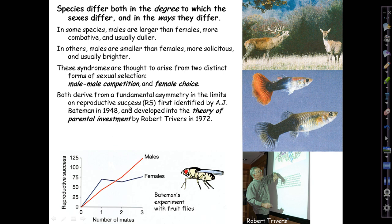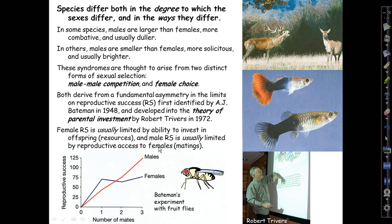Both derive from a really basic asymmetry in what limits reproductive success, often abbreviated RS. This asymmetry was first identified in print by A.J. Bateman in a then-obscure paper of 1948 on reproductive success in fruit flies, Drosophila melanogaster. About a quarter century later, it was developed into a cornerstone of the theory of parental investment by Robert Trivers, who published a great paper in 1972 that really established the framework in which we now think about sexual selection.